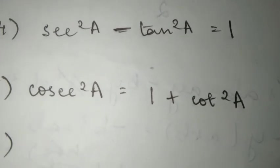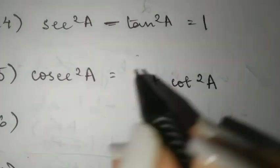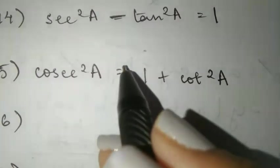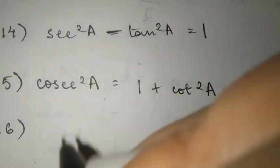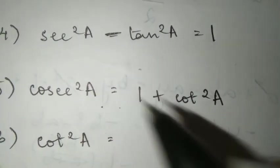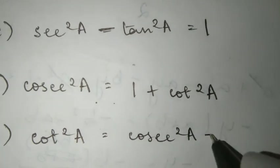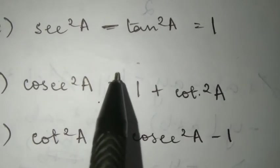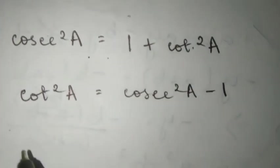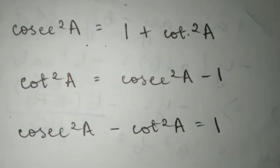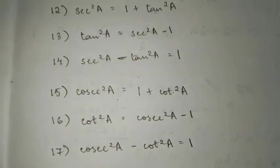Next up we have cosec square A which equals one plus cot square A. If you want cot square A by itself, shift one to the left: cot square A equals cosec square A minus one. We can also write: cosec square A minus cot square A equals one.